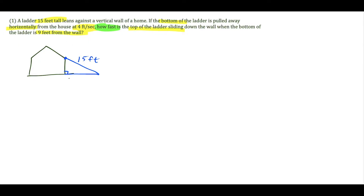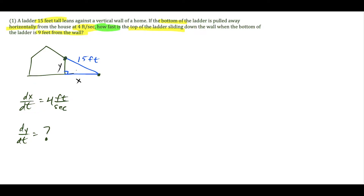We can label the horizontal segment X and the vertical segment Y. We're told the ladder is pulled away from the house at a rate of 4 feet per second, so the horizontal distance X is changing at 4 feet per second — that's dx/dt equals 4. We want to know how fast the top of the ladder is sliding down, so we're looking for dy/dt. And this is all specifically at the moment when X equals 9 feet.